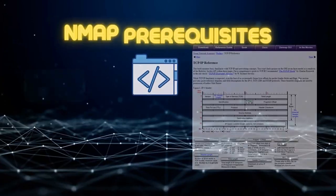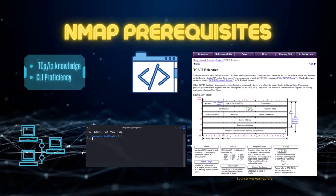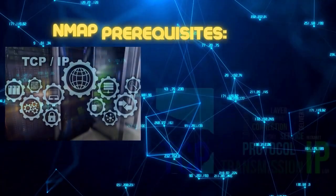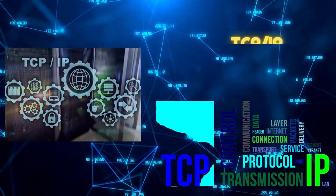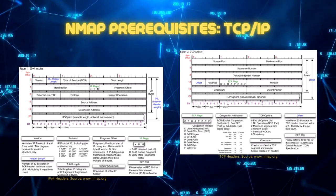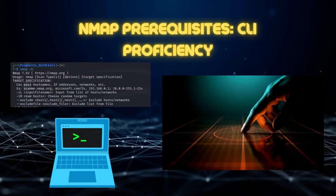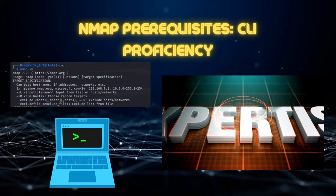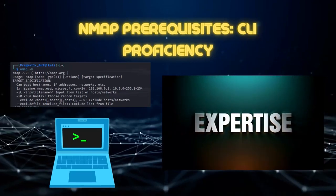Before using Nmap, there are some prerequisites that can help you better understand and effectively use the tool. Although not required, they will be extremely helpful. These include TCP/IP — while not mandatory to have an in-depth understanding, a basic knowledge of the protocol is highly recommended to interpret Nmap output. The second prerequisite is command line interface proficiency. Nmap is primarily a command line tool, so being able to navigate a command line, execute commands, and understand command syntax will be highly beneficial.